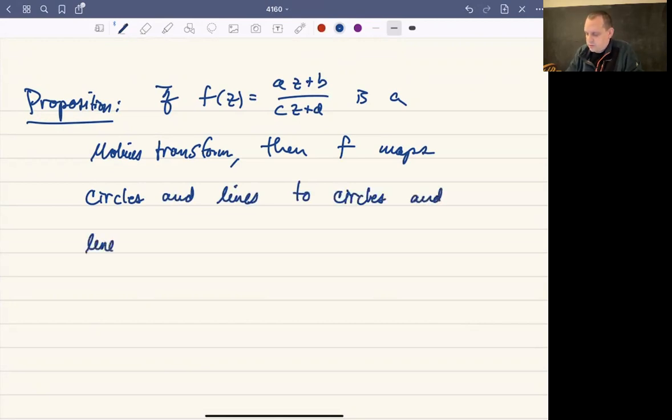In other words, what I'm saying is that if you were to take a circle as your input and plug in all the points of a circle into a Mobius transform, and then look at what the outputs are, the outputs are going to be another circle or a line. And likewise, if your inputs are lines, then your outputs are going to be another circle or a line. So this is a property of Mobius transforms. It's a nice geometric property that we'll talk about a little bit going forward.